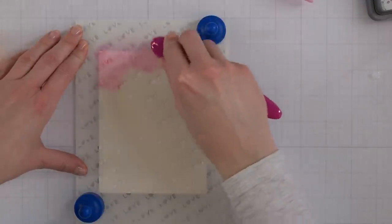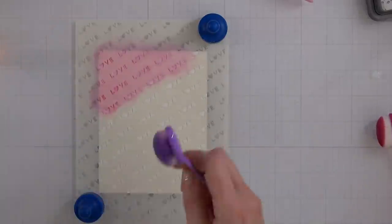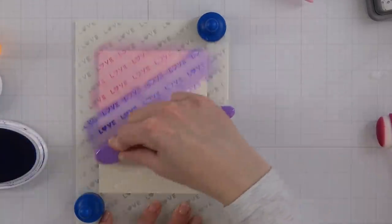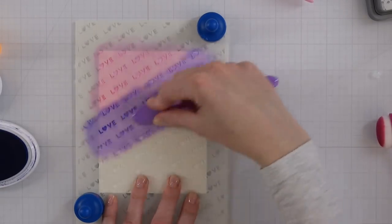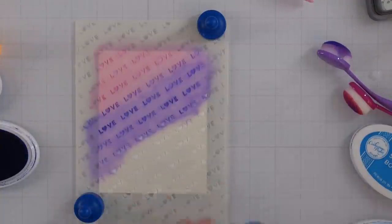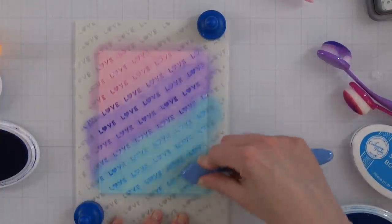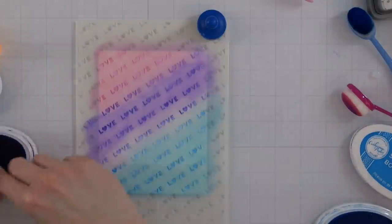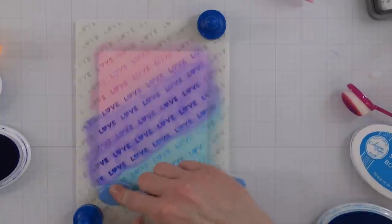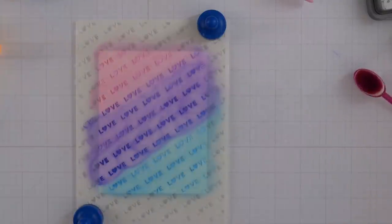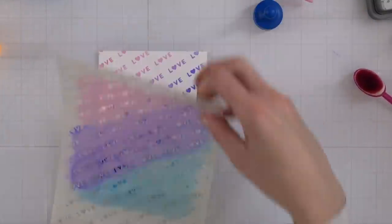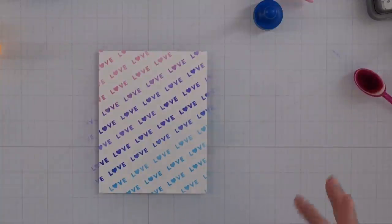This is the love stencil, and this is going to be the most seamless blending for your cards because you're using a stencil. The stencil is going to break up the blend between the colors so you're not going to get any harsh lines. I'm using these three colors. I even go back in and wipe away a little bit so I can go back with my purple. This is going to be a really cool effect.